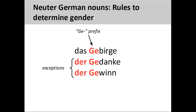Many collective nouns with a ge- prefix, such as Gebirge meaning group of mountains or mountain range, are neuter. A collective noun is a collection of things taken as a whole. There are, however, many other nouns such as Gedanke meaning thought, and Gewinn meaning profit, that are not neuter.